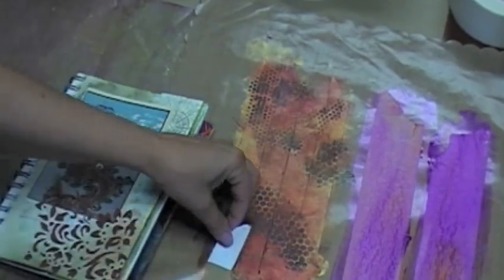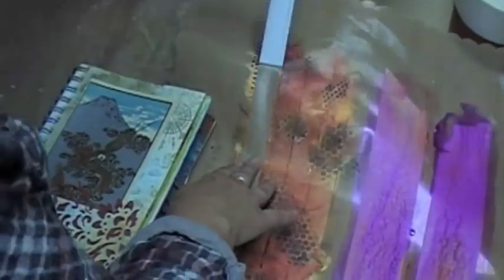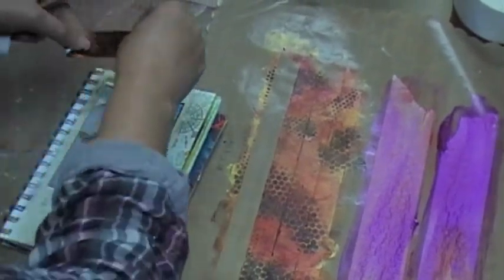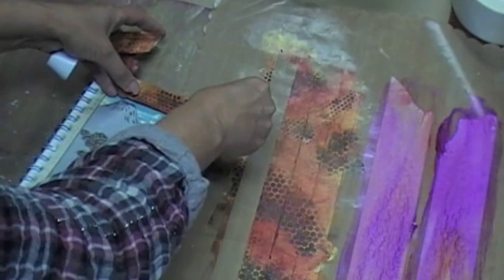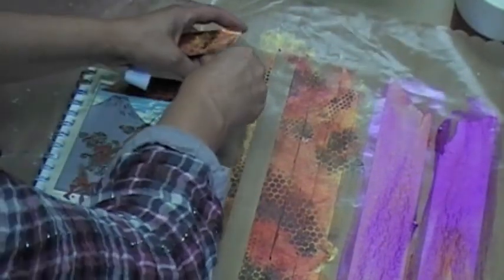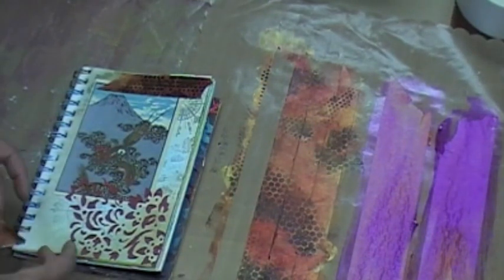Now we're gonna go ahead and use our washi tape that we just made in our art journal. I'm just gonna break off a little piece just like you would do your normal tape. This adhesive still works perfectly fine and you can rip it and tear it because it's artist tape. You can look at that perfection.